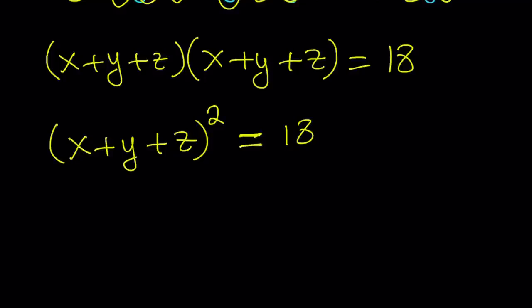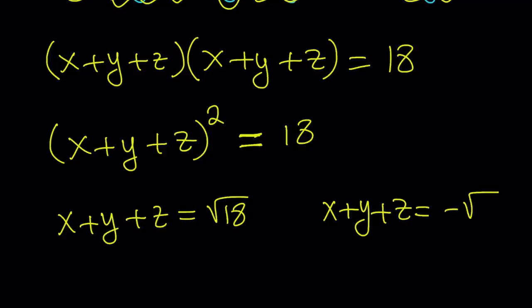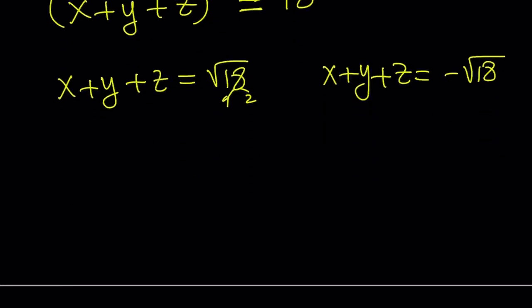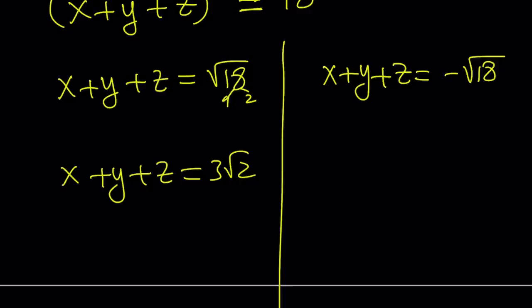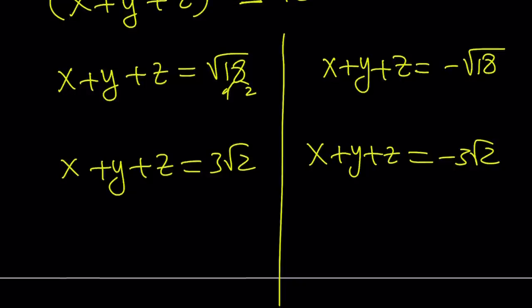So you can take the square root of both sides, and you get square root of 18, or negative of that, and square root of 18 is basically 9 times 2, so this is equivalent to 3 root 2. Let's go ahead and write it that way. x plus y plus z is 3 root 2, or x plus y plus z is negative 3 root 2. So basically, whatever you do, it's just going to be negated, same thing, because if x is a solution, then negative x is also a solution. Make sense? You could also go off of that.